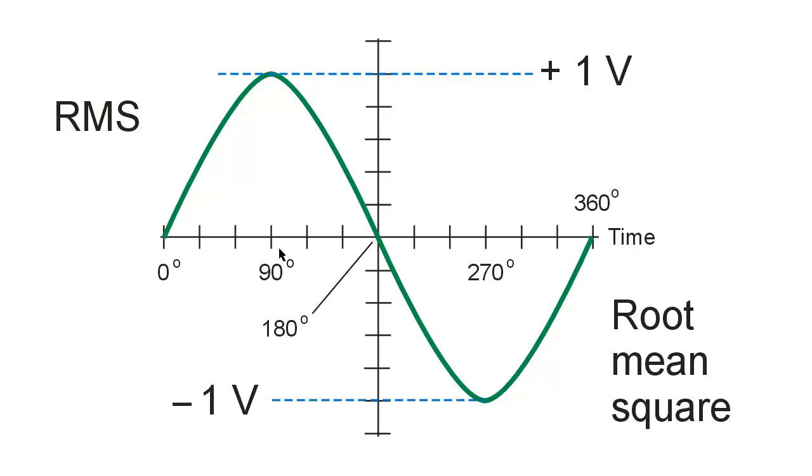90 degrees is a quarter of the way through the cycle. We reach a voltage of plus 1 volt peak. Then we get down to 0 again halfway through the cycle at 180 degrees and continue on negatively until we reach the negative peak voltage of minus 1 volt at 270 degrees, three quarters of the way through the cycle, 360 degrees all the way back to the beginning of the next cycle.